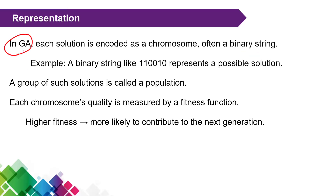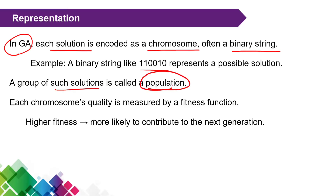How do we represent a solution in genetic algorithms? In a genetic algorithm, a solution is represented in the form of a chromosome. A chromosome is generally a fixed-length binary string — for example, 1 1 0 1 1. This is one possible solution for a given problem.